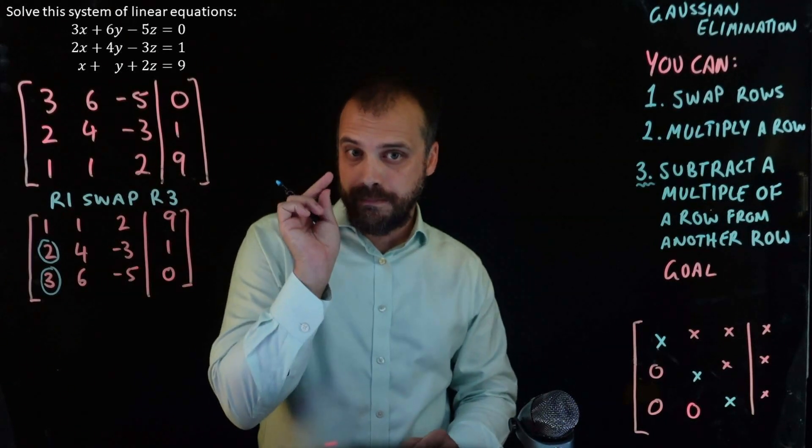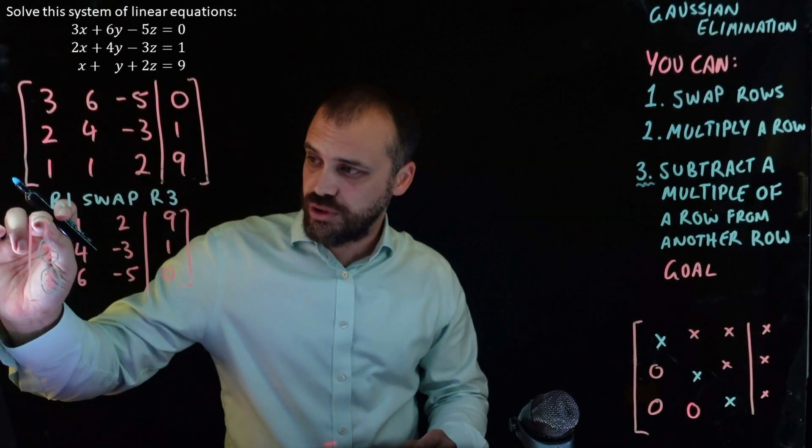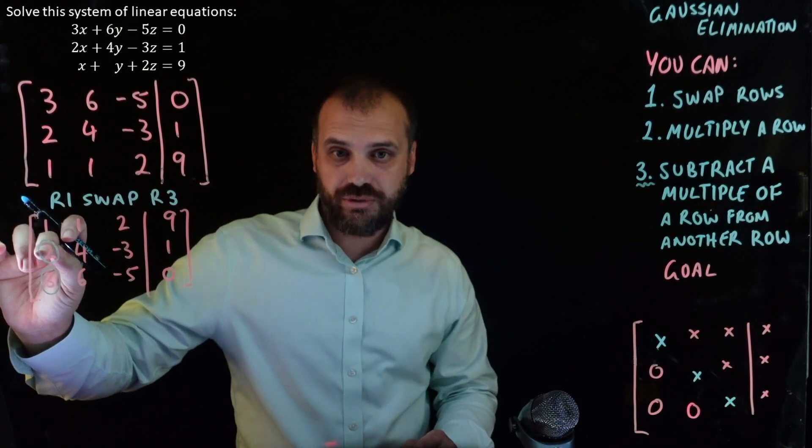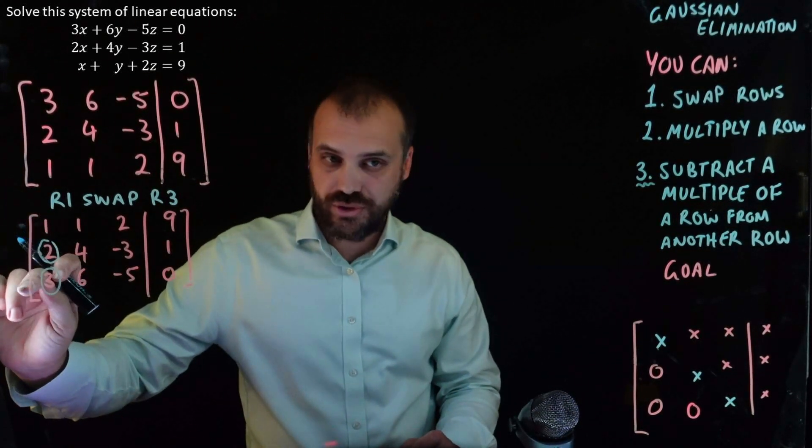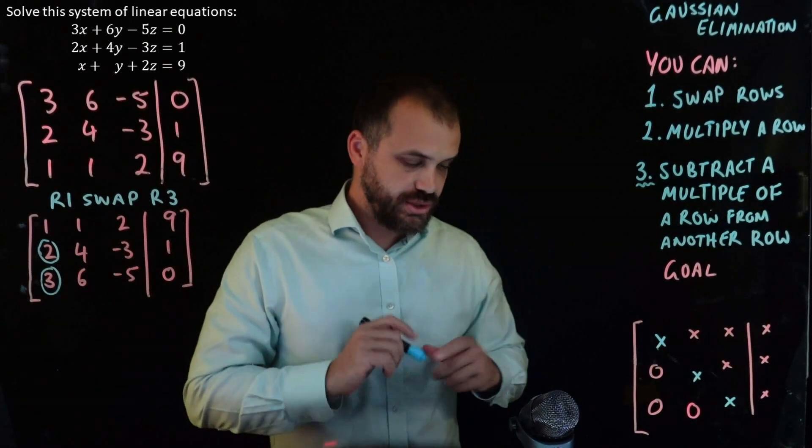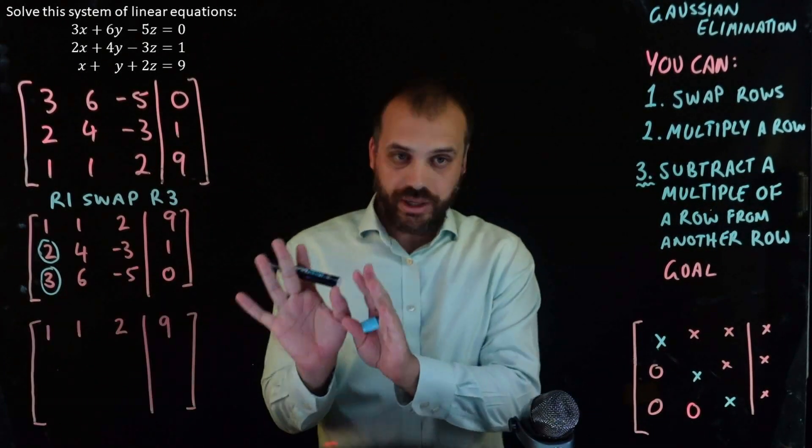Subtract a multiple of a row from another row. And we're going to subtract a multiple of the first row from the second row. And we're going to subtract a multiple of the first row from the third row. Okay, so let's get ourselves set up. Okay, I'm set.